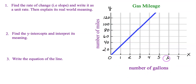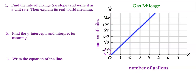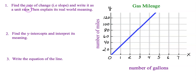On the x-axis, the numbers represent number of gallons. On the y-axis, the numbers represent number of miles — probably driven in your car. Now let's go back to the question: find the rate of change or slope.